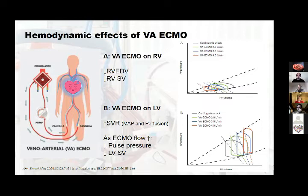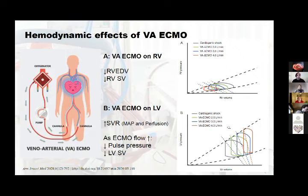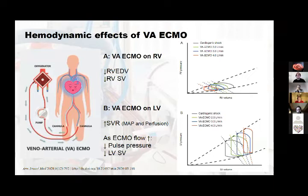We see that the loop is moving to the left as we increase ECMO flow. We need to think of ECMO flow as a different cardiac output — as we increase the oxygenated ECMO flow, we are increasing an external cardiac output. Increasing ECMO flow will decrease pulse pressure and decrease left ventricular stroke volume, which we can measure externally by echocardiography. So to improve perfusion, we increase ECMO support and we will see a decrease in pulse pressure.